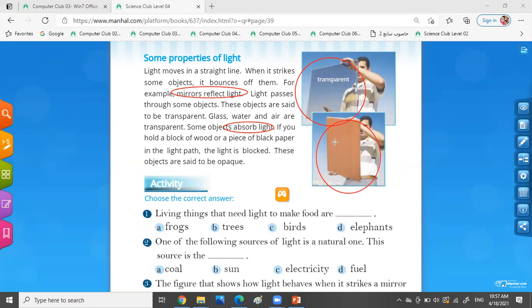So now, the light is blocked. We say the light is blocked because he put a block of wood. These objects are said to be opaque. Opaque and transparent: transparent like water, air, glass; and opaque like wood, a block of wood, or a piece of black paper that blocks the light.